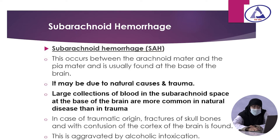Natural causes of subarachnoid hemorrhage include rupture of berry aneurysm, atherosclerotic condition, leaking intracerebral hemorrhage, and disease conditions like purpura, leukemia, and angioma. Traumatic causes include cerebral contusion and laceration, explosion blast, asphyxia by strangulation, traumatic asphyxia, and prolonged hyperextension of the neck during bronchoscopy.